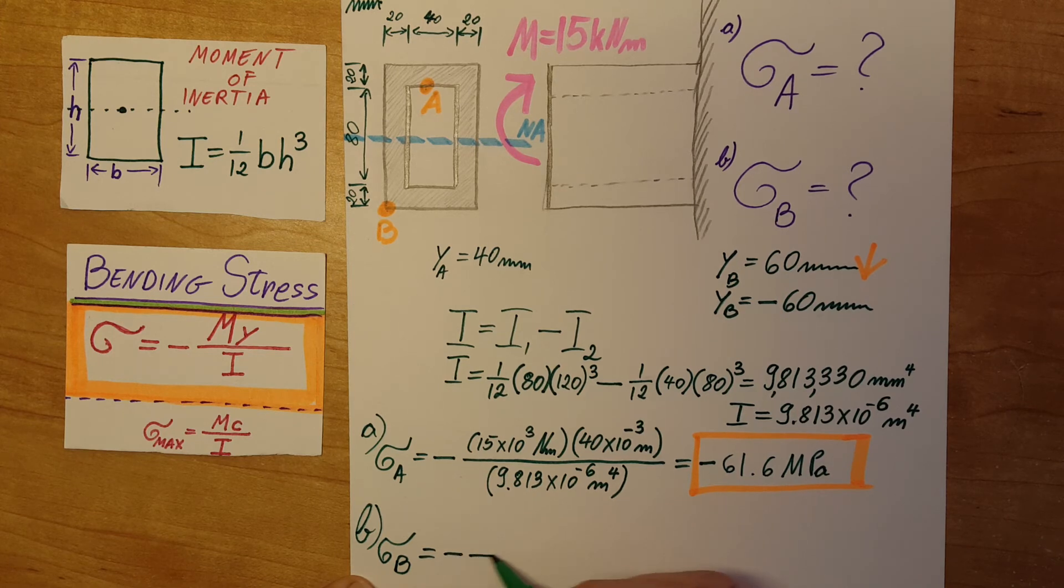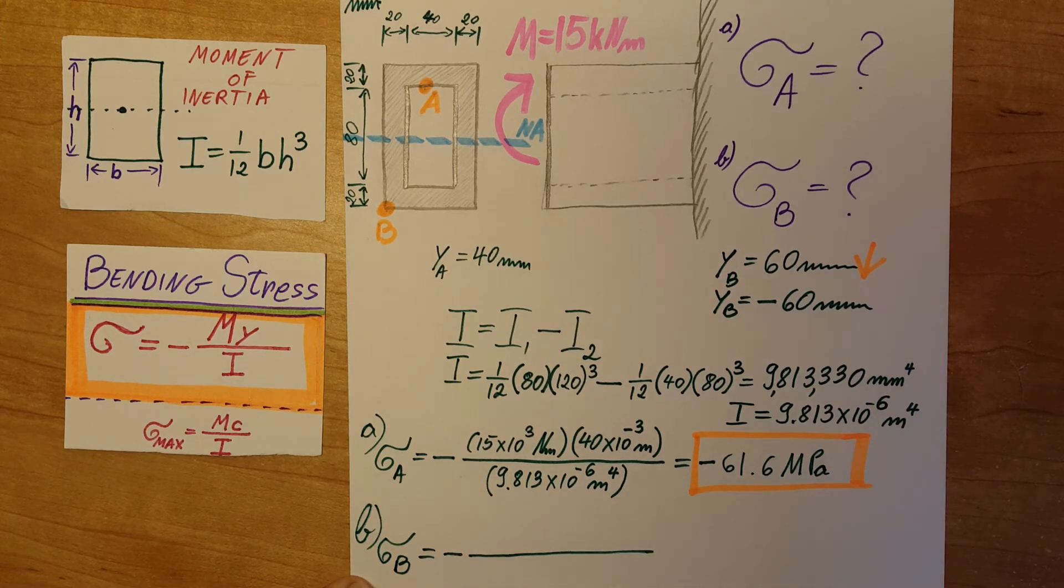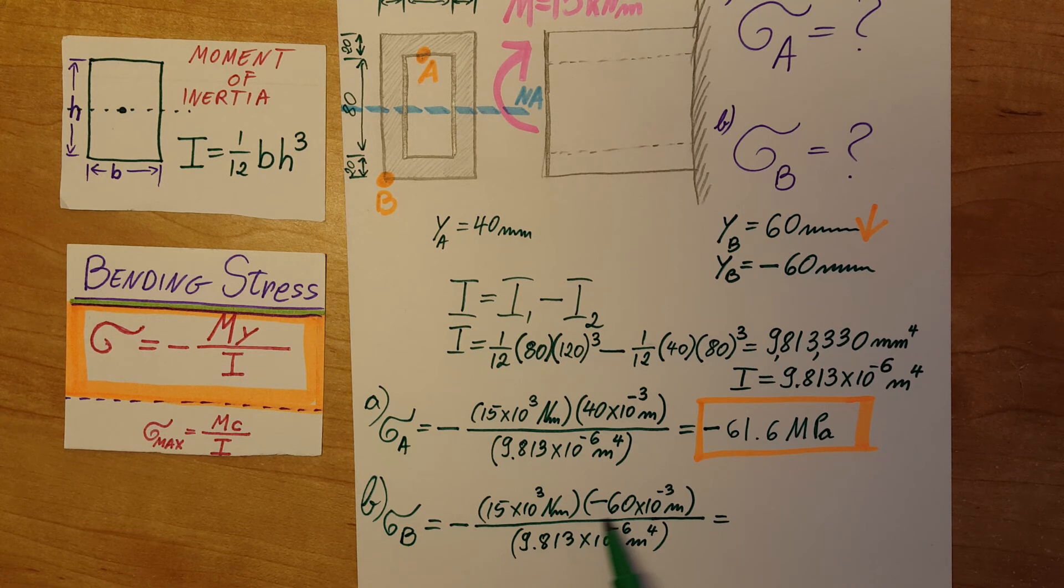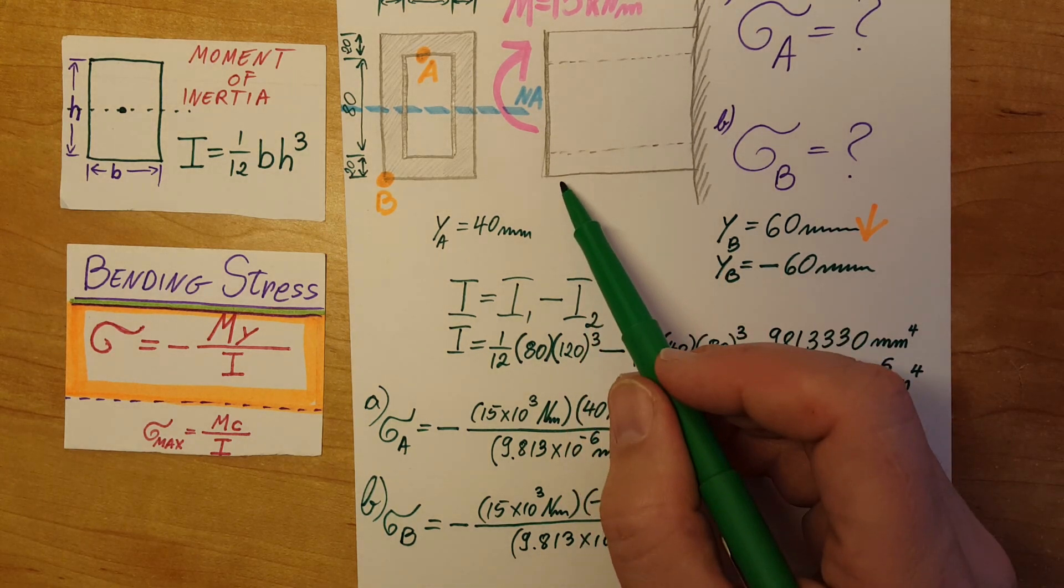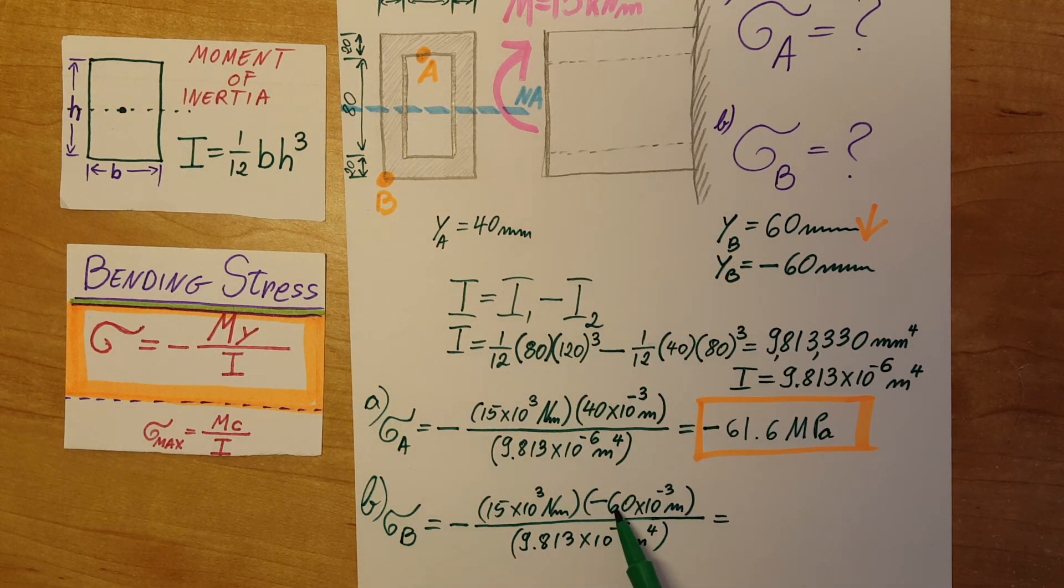Now let's take a look at the stress at point B minus, and let's go ahead and plug in. And here it is, all plugged in. The trick, make sure you remember that YB is negative. We are going towards the bottom of it, therefore negative 60 millimeters.